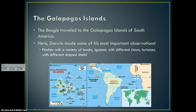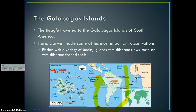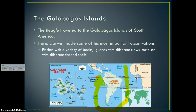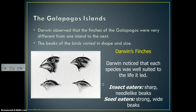The Beagle traveled to the Galapagos Islands right off the coast of Ecuador, and this is where Darwin made some of his most important observations relating to evolution. He studied finches, iguanas, and tortoises. Most importantly, I think, were his studies of the finches — this is where he spent most of his time, making detailed drawings and recordings of what he saw.